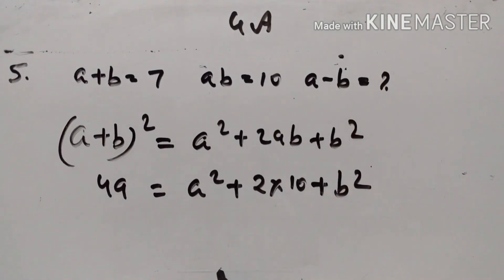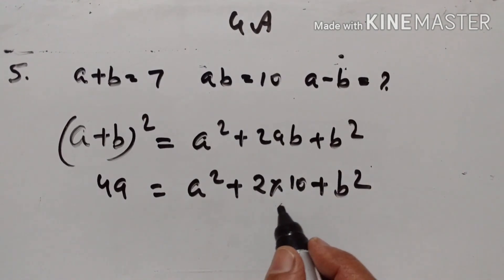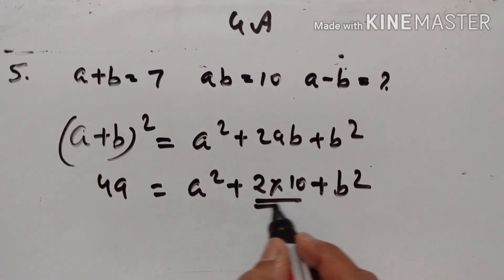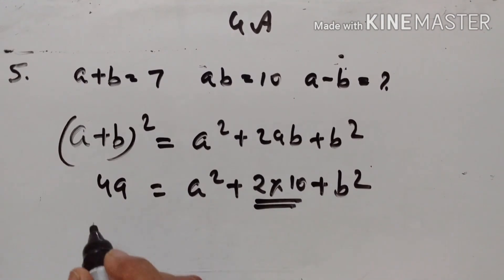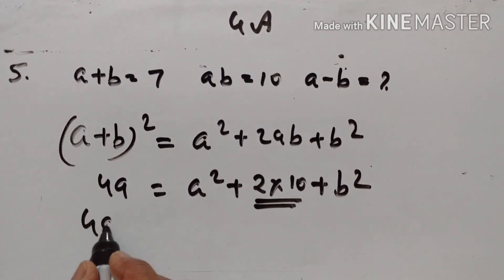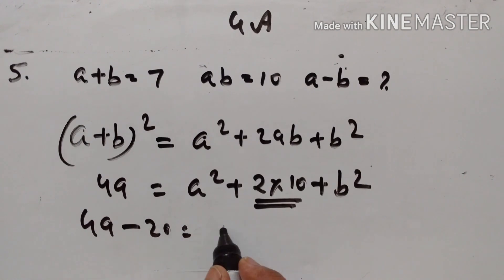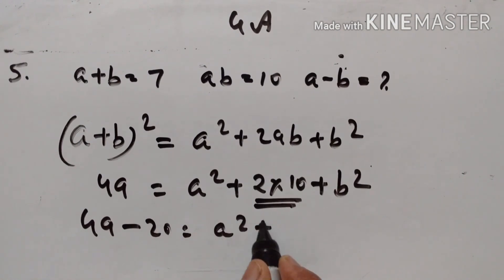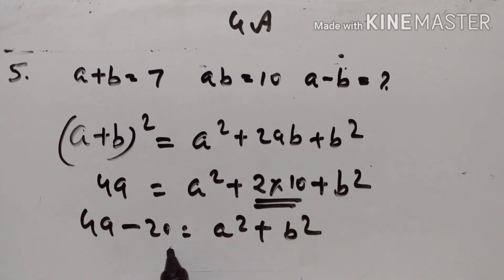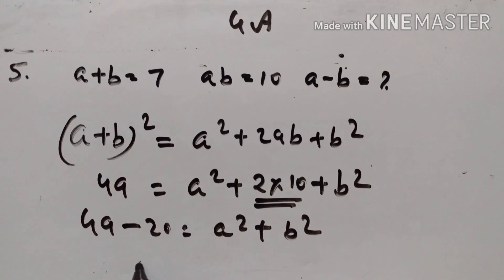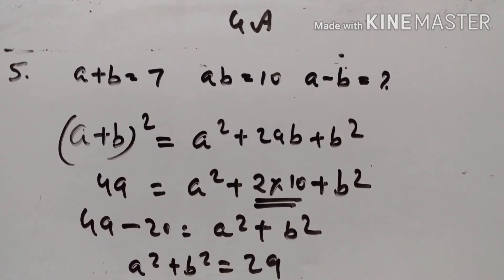Let us transpose 20 to the left side. So it becomes 49 minus 20 = A² + B². That gives us 29. So A² + B² = 29.